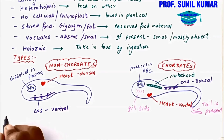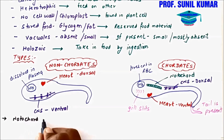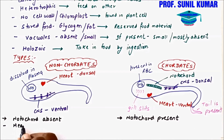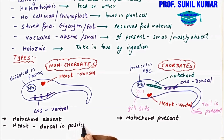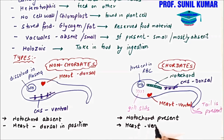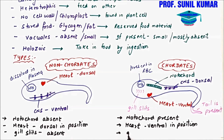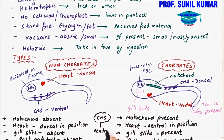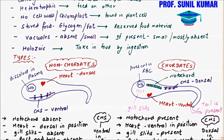Quick recap: In non-chordates, notochord is absent; in chordates, notochord is present. In non-chordates, the heart is dorsal; in chordates, the heart is ventral. Gill slits are absent in non-chordates but present in chordates. Post-anal tail is absent in non-chordates, present in chordates. The CNS is ventral in non-chordates and dorsal in chordates.